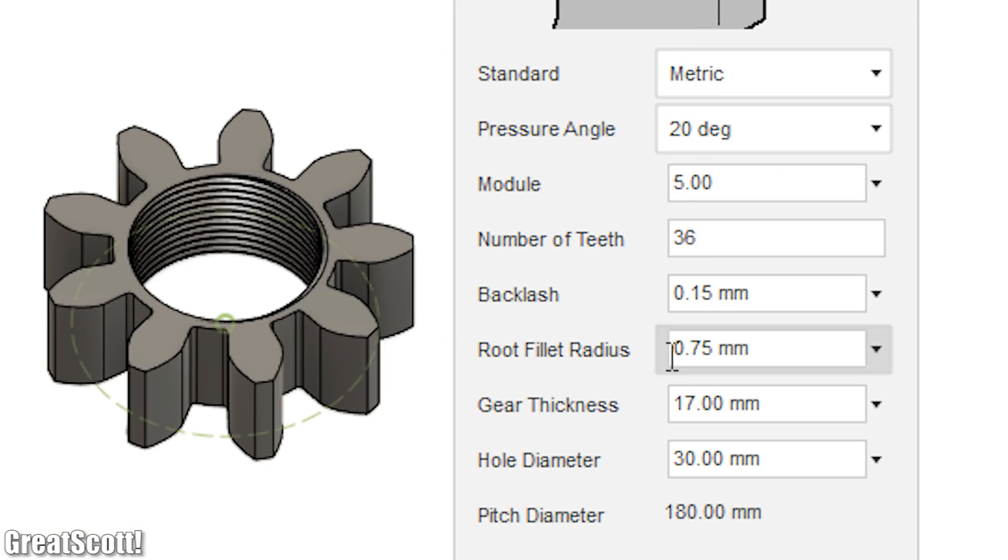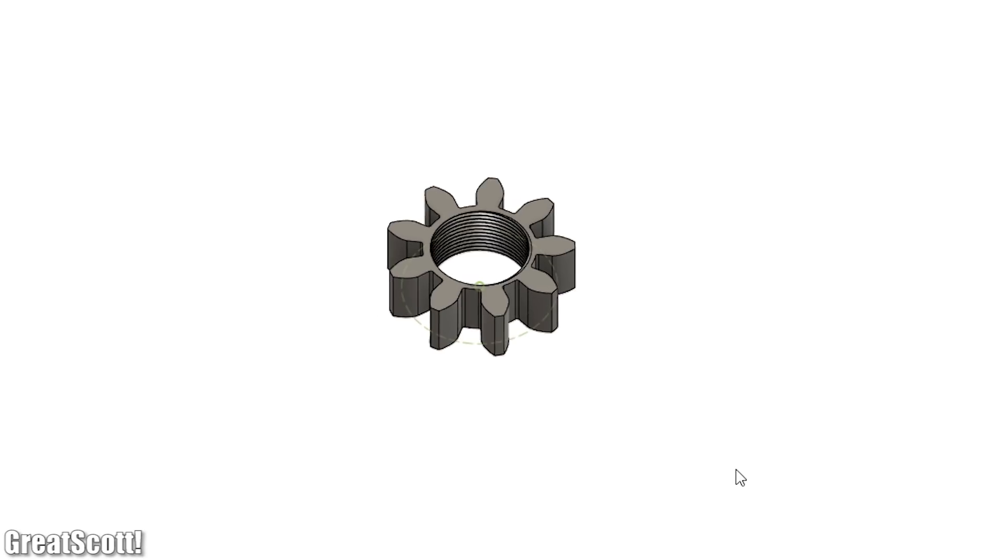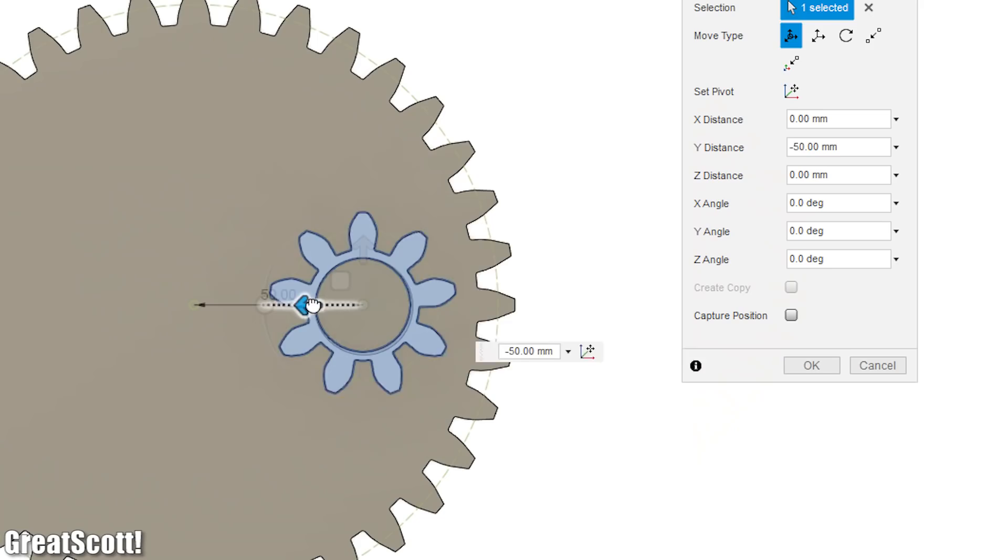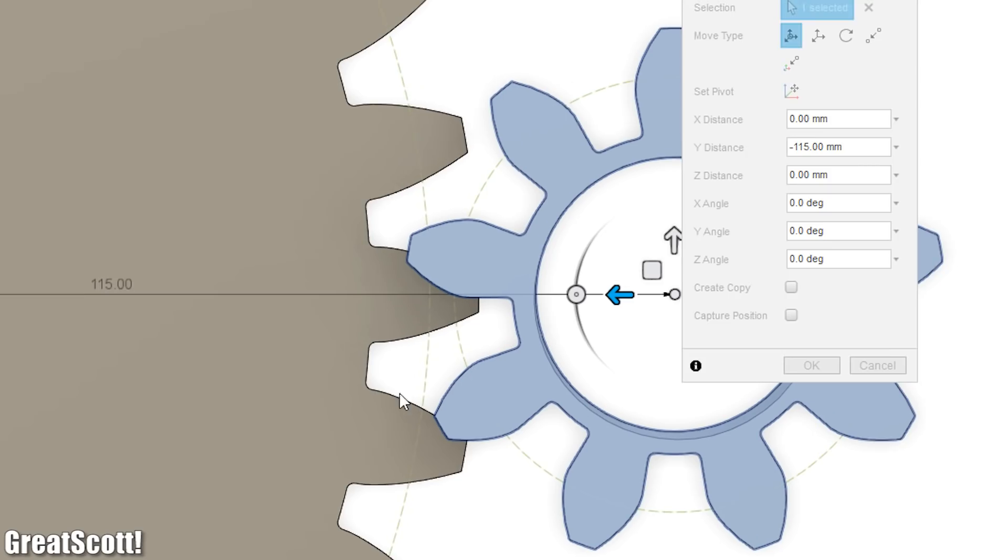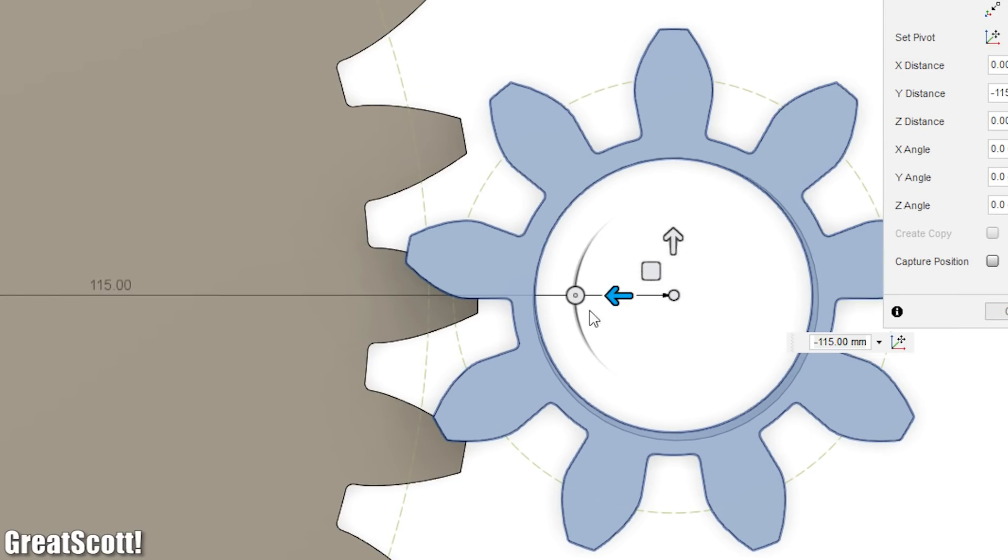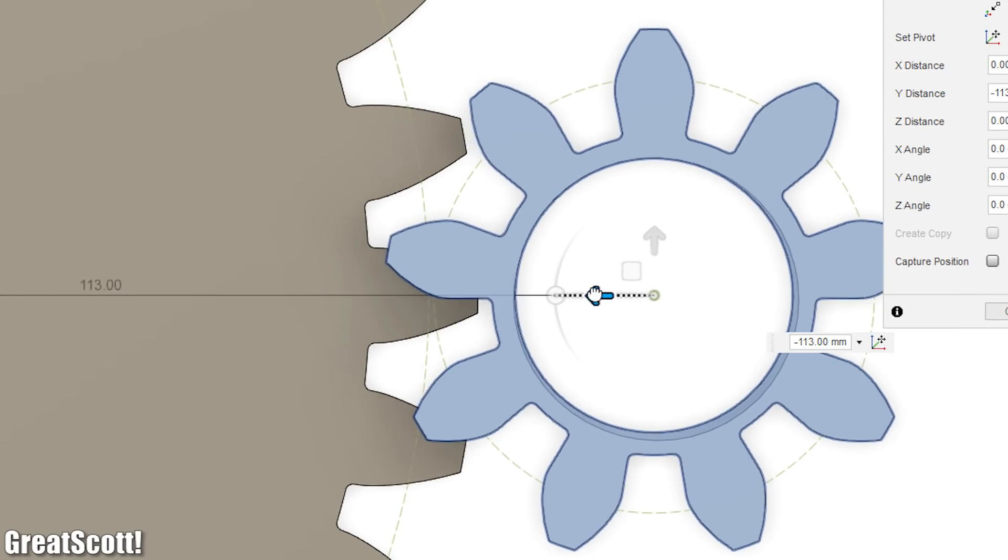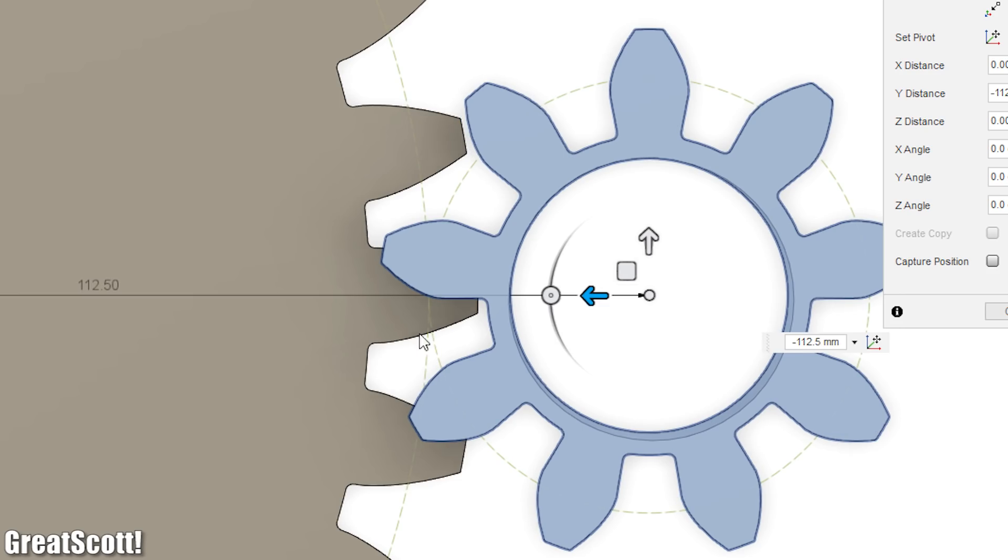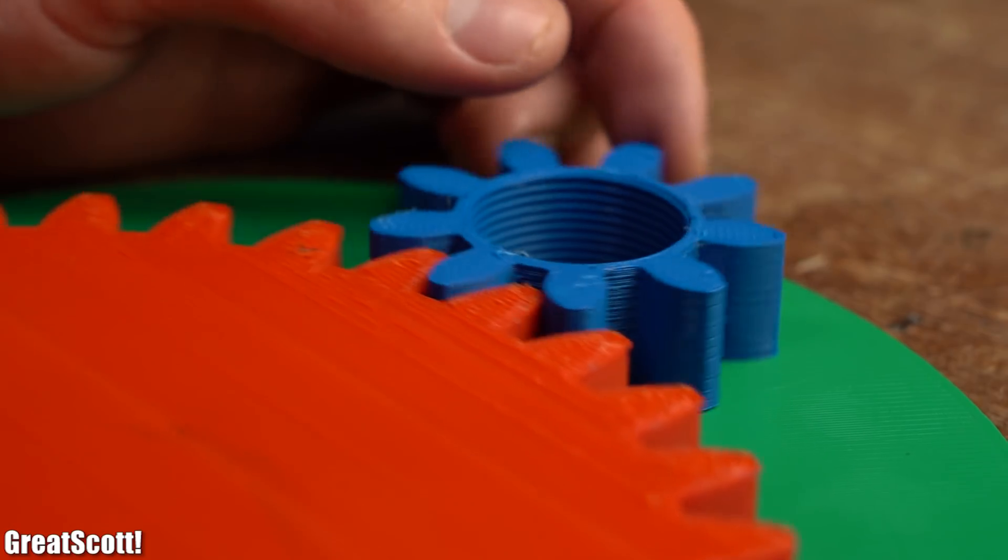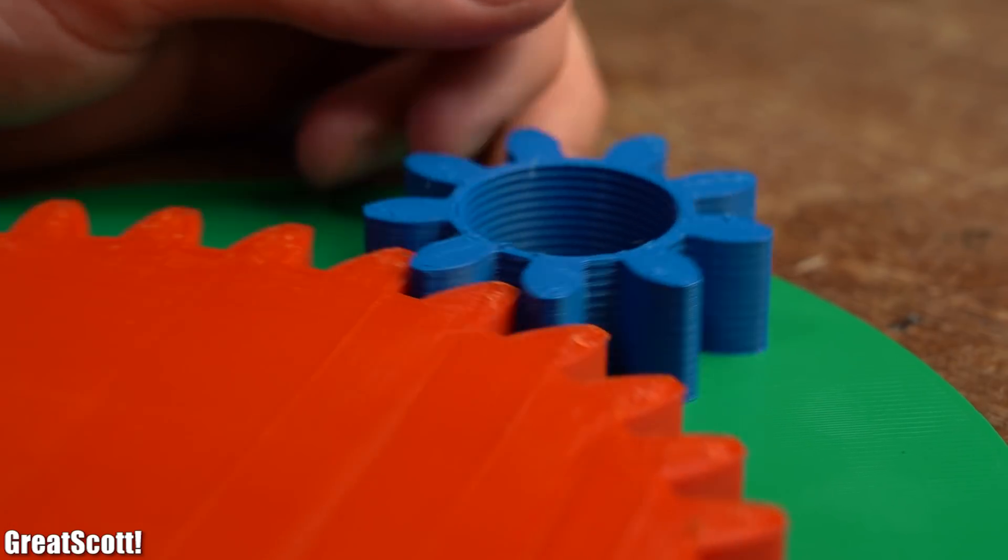So next I once again used the spur gear add-in to create the bigger 36 teeth gear. With the help of the move function, I then positioned the smaller gear to the sides until the dotted circles of both gears perfectly hit each other in one point, which basically means that they will later perfectly interlock.